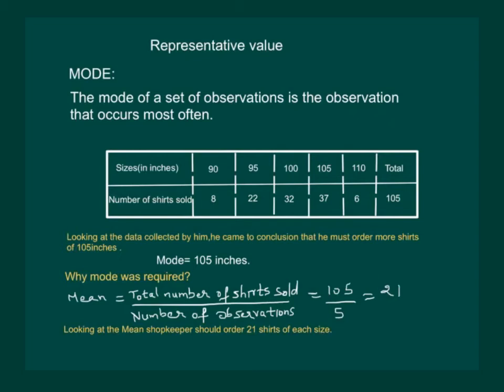Now, it is for you to decide whether it would be wise for the shopkeeper to use mean and order the shirts or use mode. If he orders 21 shirts of all sizes, he won't be able to fulfill the requirement of 100 inch and 105 inch shirts, while he will be in overstock of 90 inches and 110 inches shirts.